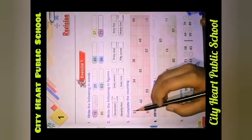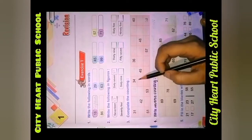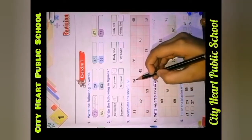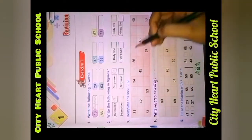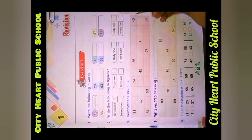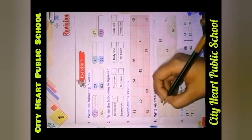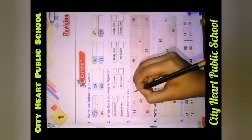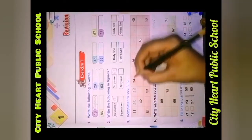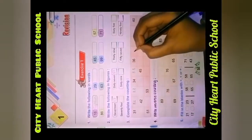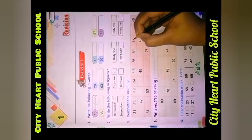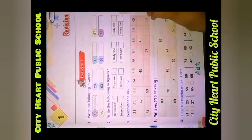Then question number 3: Complete the counting. Aapko puri counting complete karni hai. Jaise 31 hai, then 32, 33, 34, 35, 36, 37, 38, 39, and 40. Main ek row likh deti hoon, baaki ki doori aapko khud likhni hai. 35, 36, 37, 38, 39, and then 50. Isi tarah aapko puri counting complete karni hai.